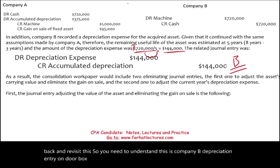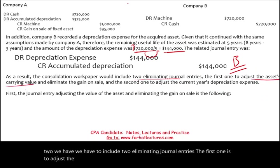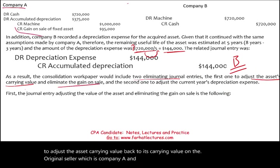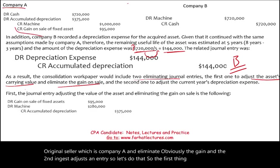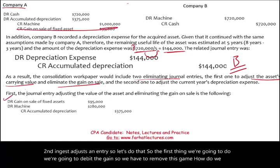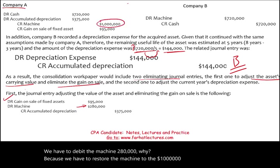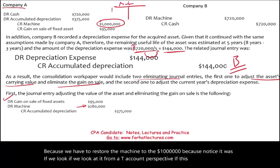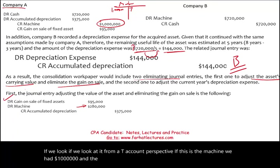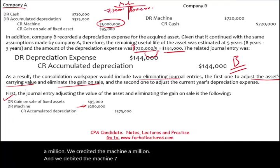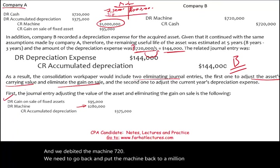As a result of the consolidation workpaper, we need two eliminating journal entries. The first is to adjust the asset carrying value back to its carrying value on the original seller — Company A — and eliminate the gain. We debit the gain to remove it, and we debit the machine $280,000 to restore it to $1,000,000. Looking at the machine T-account: we had $1,000,000 cost, then credited the machine $1,000,000 to remove it and debited $720,000 for Company B. That leaves a credit of $280,000, so we debit the machine $280,000 to get back to the original cost.